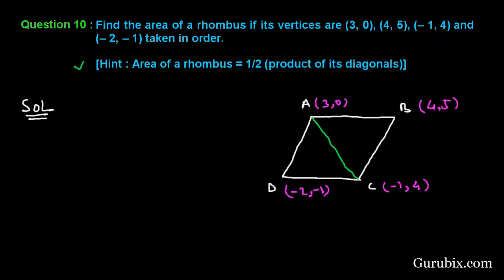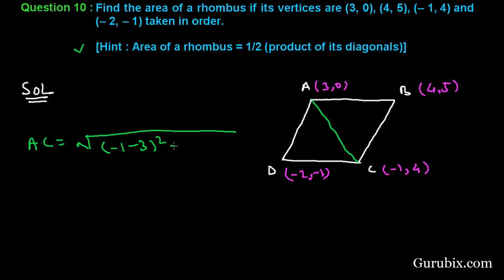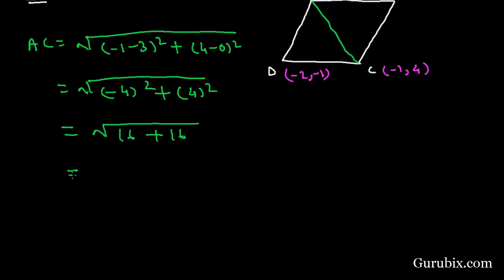We shall find the length of both diagonals using the distance formula. AC is the first diagonal. AC equals the square root of (−1 − 3)² + (4 − 0)², which equals the square root of (−4)² + 4², that is 16 + 16, which is the square root of 32, giving us 4√2.